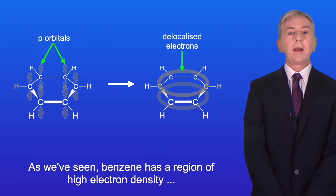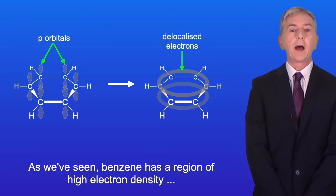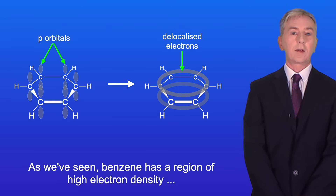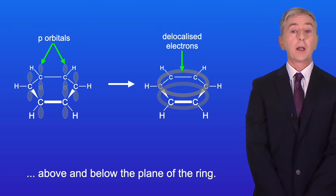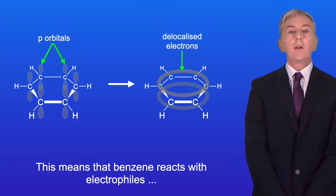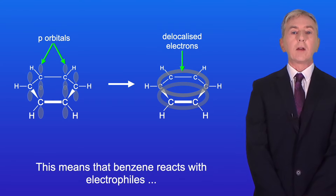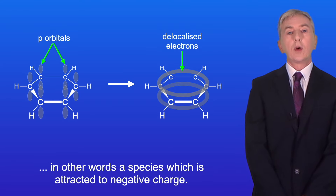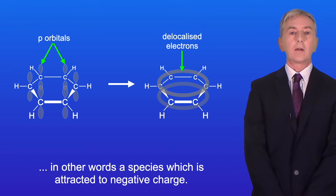Benzene has a region of high electron density above and below the plane of the ring. This means that benzene reacts with electrophiles — in other words, a species which is attracted to negative charge.